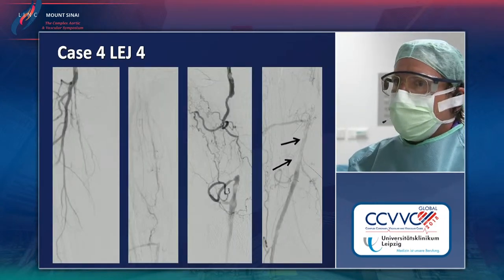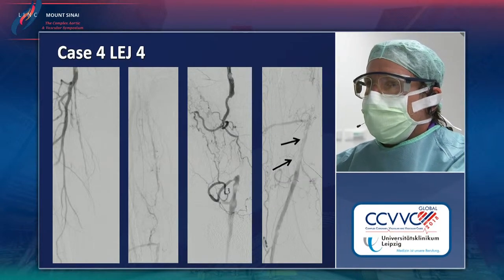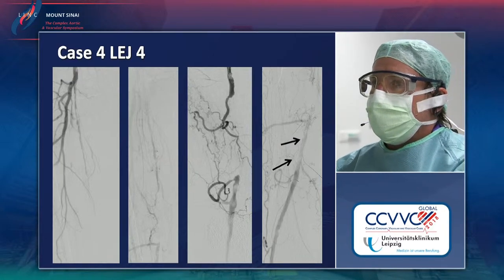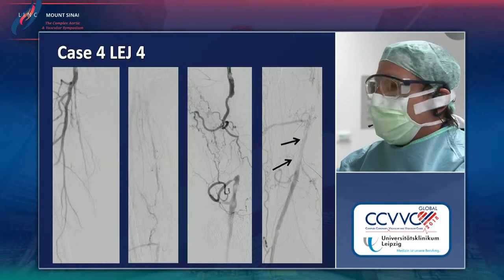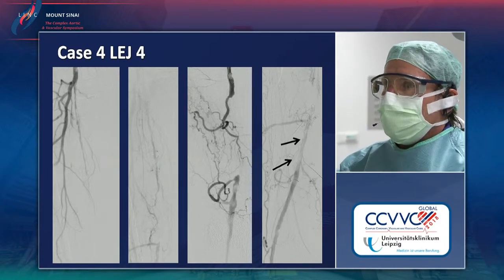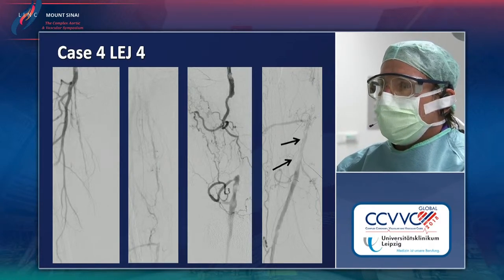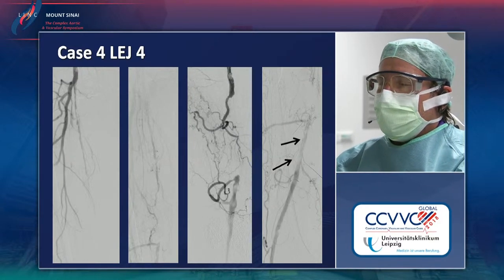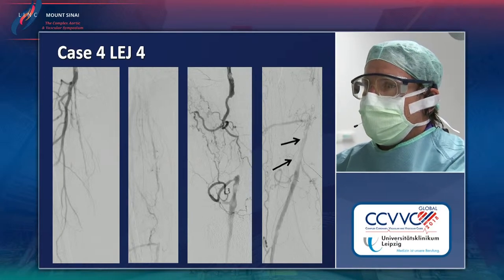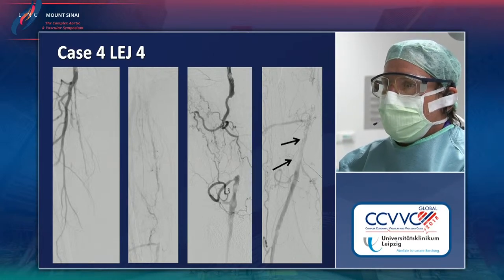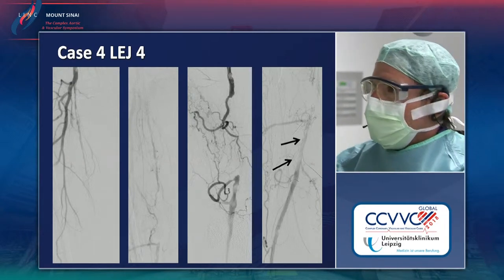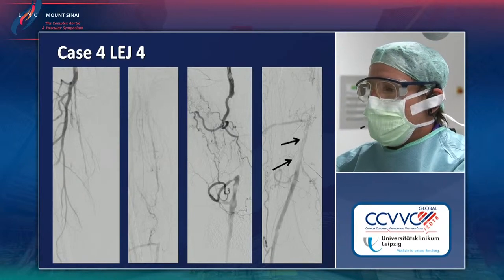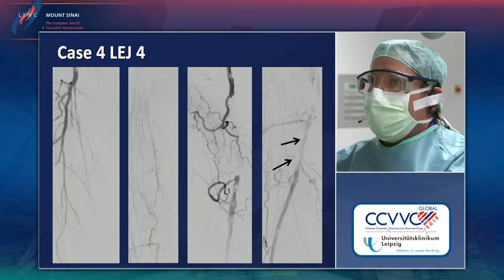This is the angiography. You can see the proximal portion of the SFA on the right side is still patent but severely diseased. Then there is occlusion — a quite calcified occlusion. Elsewhere there was already an attempt to recanalize this occlusion, also with a retrograde puncture of the distal SFA, indicated here by the arrows. However, that attempt was not successful and now we hope we can recanalize this occlusion. This patient is really symptomatic and truly requires treatment.